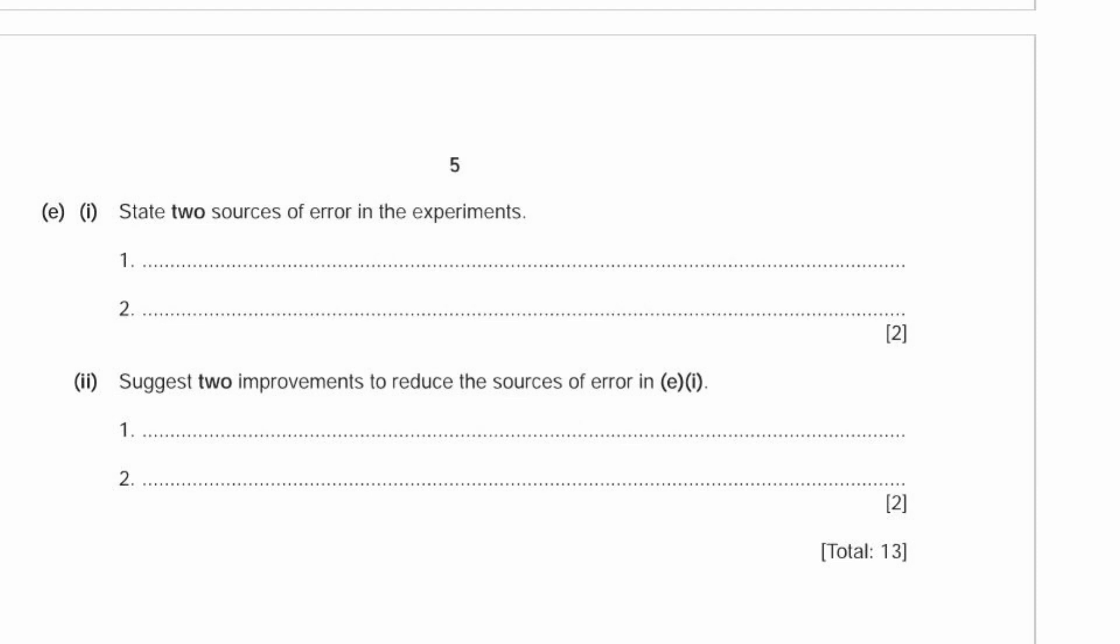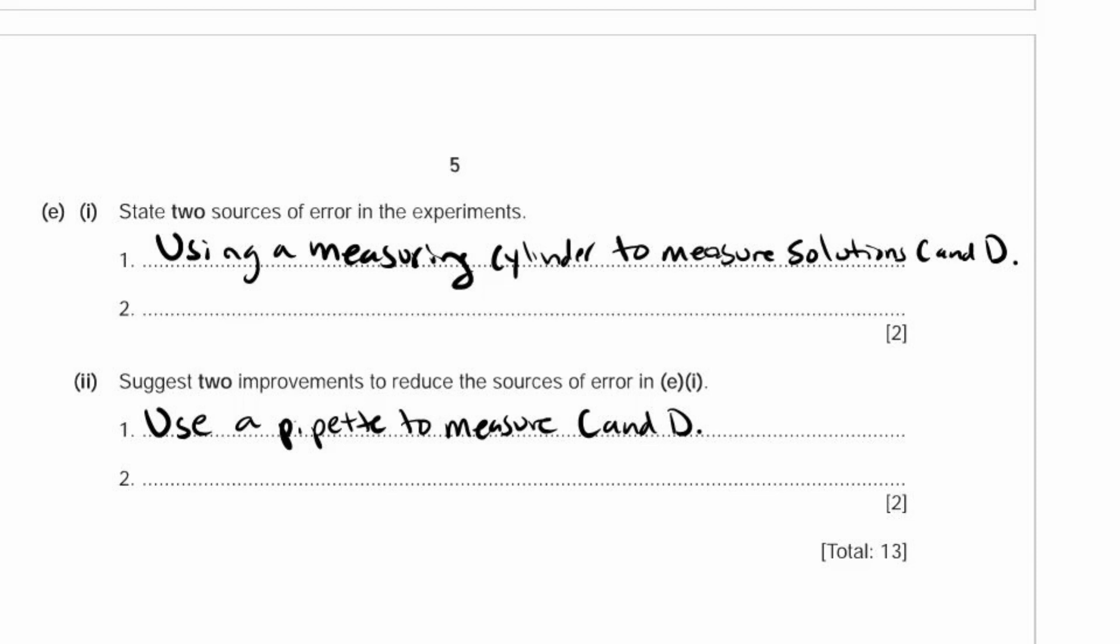E1. State two sources of error in this experiment. One source of error is that they used a measuring cylinder to measure solution C and D. E2. Suggest two improvements to reduce the source of error in E1. The improvement for using a measuring cylinder would be to use either a pipette or a burette. Another source of error is that they only did the experiment once, which is generally not good enough. The improvement is to repeat the experiment twice. Repeating it twice means they do three trials in total, and that's a good number to get an average.